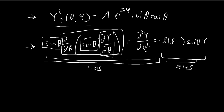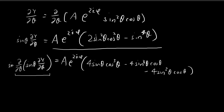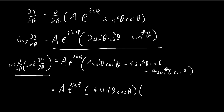We multiply this whole expression by sine theta, raising all sine powers by one — so we get sine squared, sine to the fourth, sine to the fourth terms. We can simplify by pulling out 4 sine squared theta and cosine theta: the remaining terms give cosine squared theta, then sine squared theta, and again sine squared theta. Combined, that yields negative 2 sine squared theta — so this is the simplified left-hand side theta term.